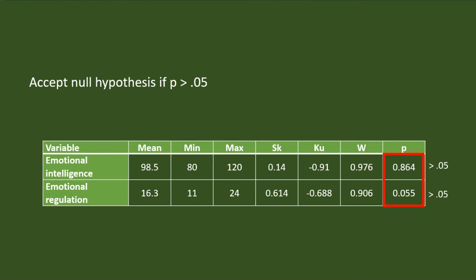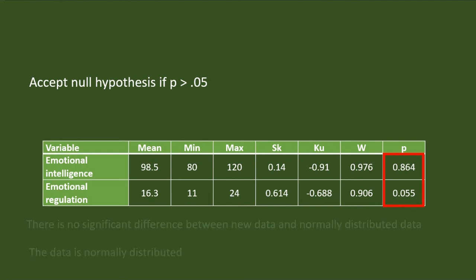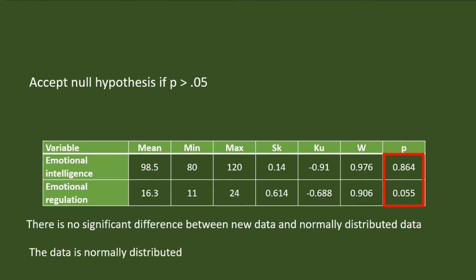That means we have to accept the null hypothesis. The null hypothesis is: there is no significant difference between the new data and the normally distributed data. That means the data is normally distributed. That's it — we have interpreted the results of the Shapiro-Wilk test of normality.